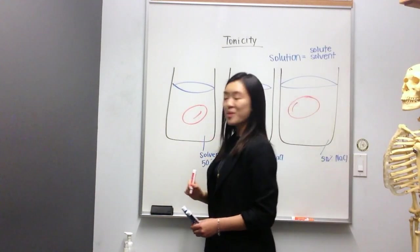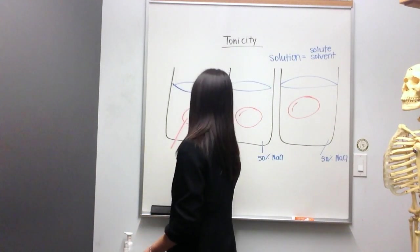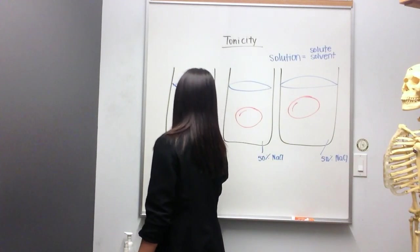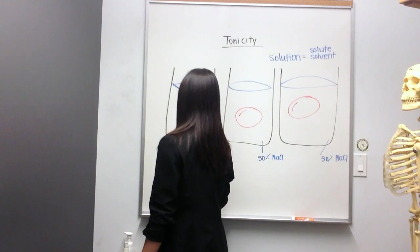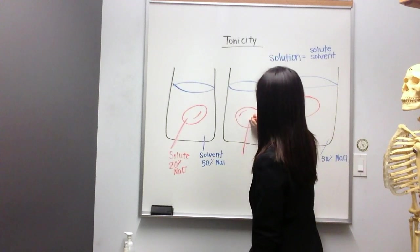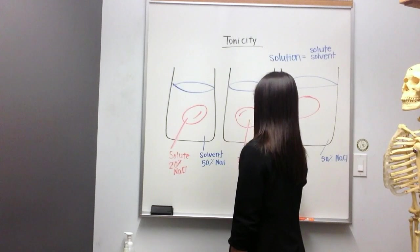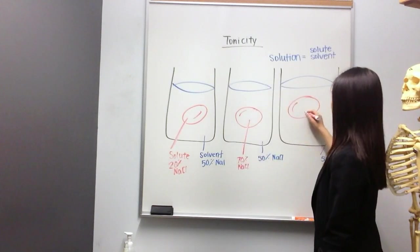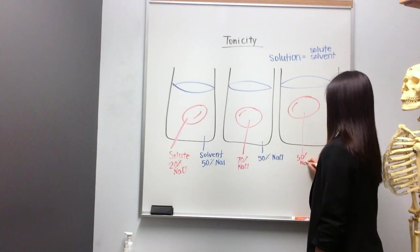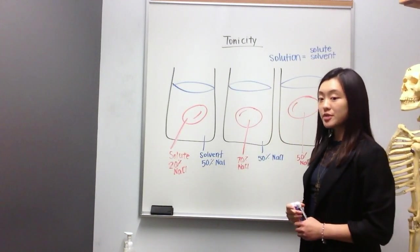In example number one here, let's say our blood cell, which also has a salt content, and we'll say that this, also known as our solute, has a 20% NaCl content. And perhaps in this red blood cell, we'll say that he's got 70% NaCl. So we have three separate examples here, and we'll work through them one at a time.